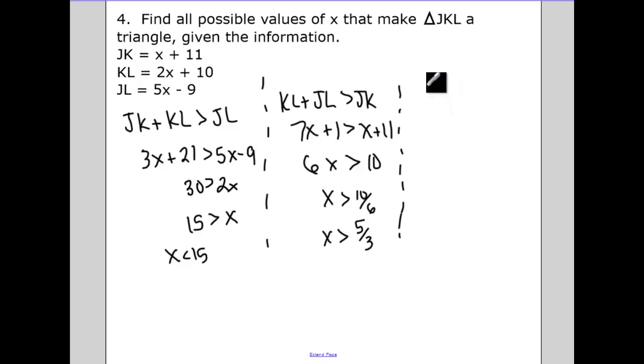Now we have to set up our last set of inequalities. The last set, J, K plus what side haven't I used as my smaller side? I've used J, L. I've used J, K, so that's K, L. I have J, K, K, L. I need J, L there. So J, K plus J, L, that's going to be six x plus two greater than two x plus ten.